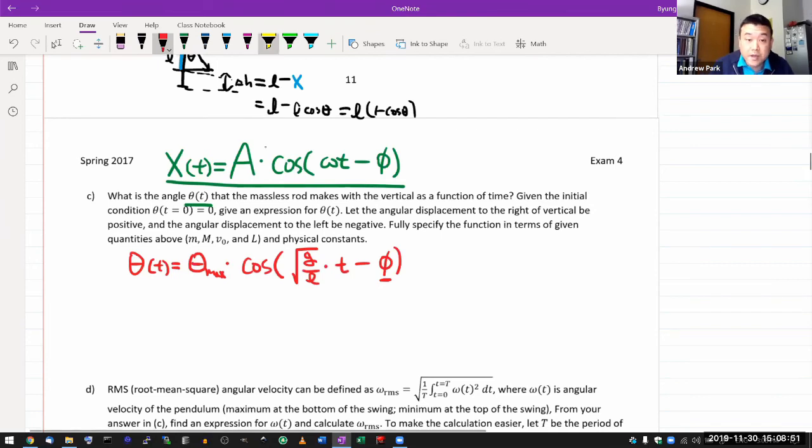You plug in t equals zero. Then you get cosine of minus phi is equal to, well, theta is equal to zero. So this is the expression you've come down to. Cosine of phi is equal to zero.